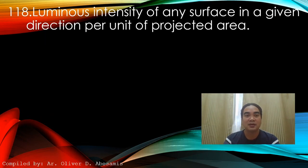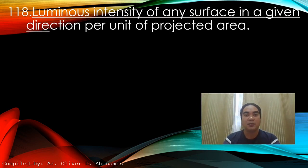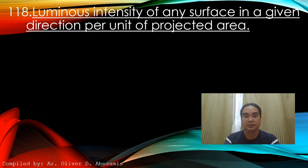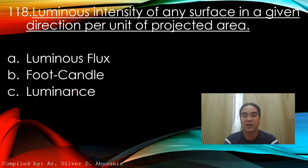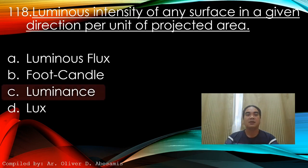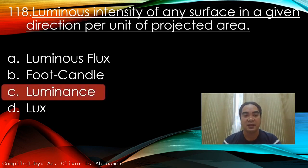Question 118: Luminous intensity of any surface in a given direction per unit of projected area. A) Luminous flux, B) Foot-candle, C) Luminance, D) Lux. Answer: C) Luminance.